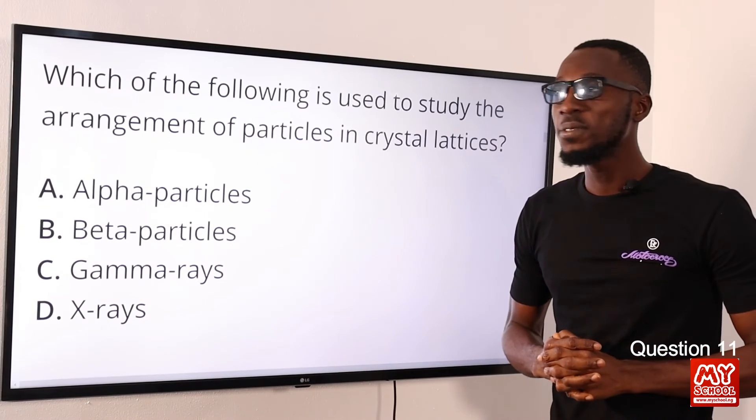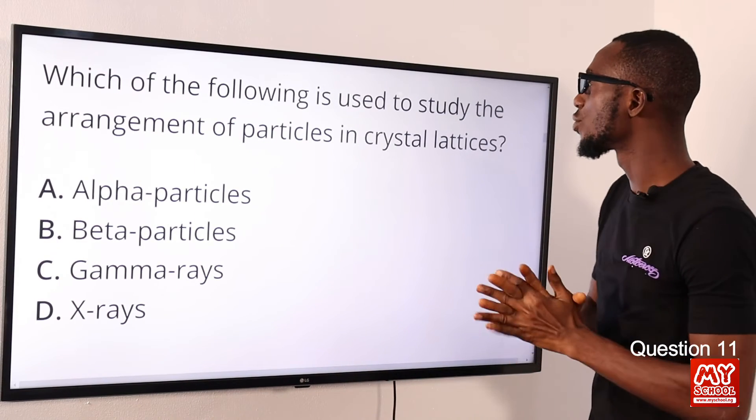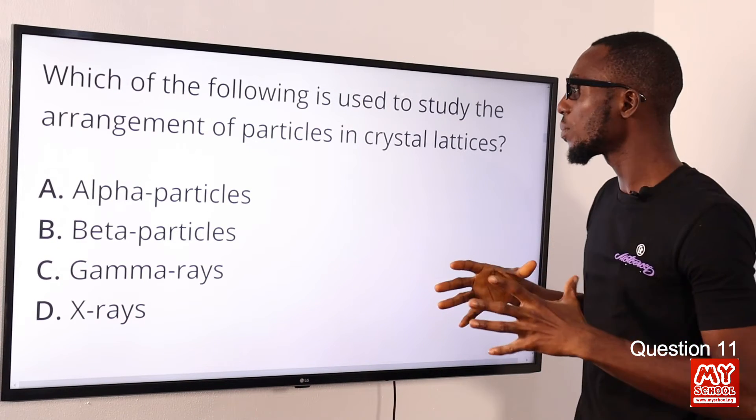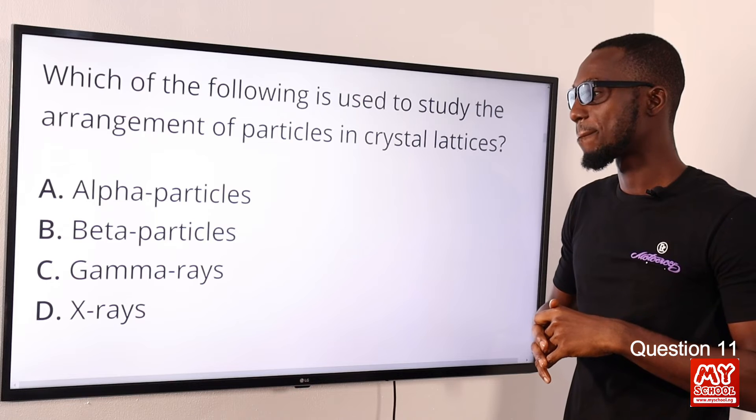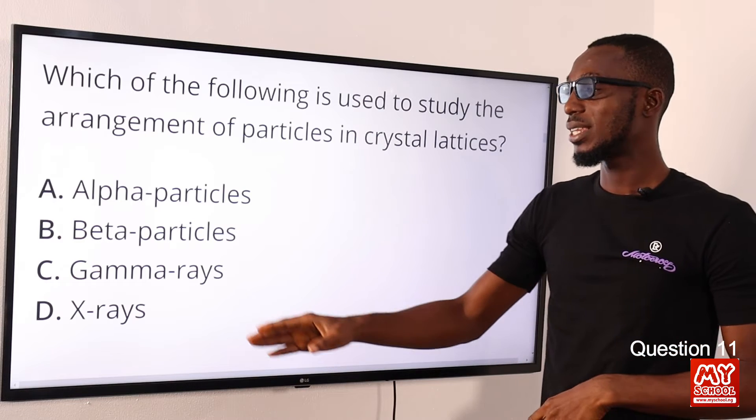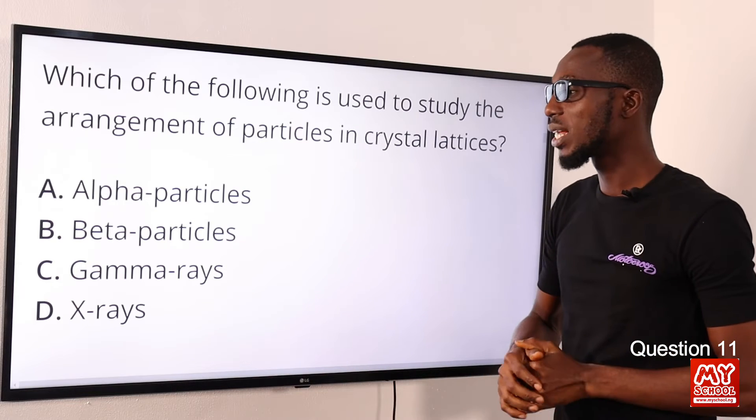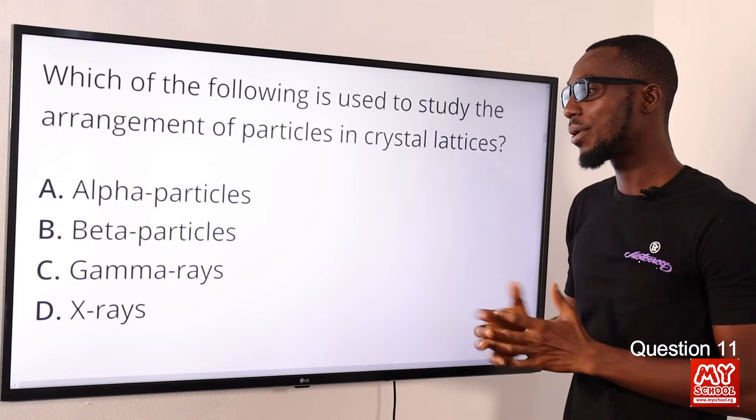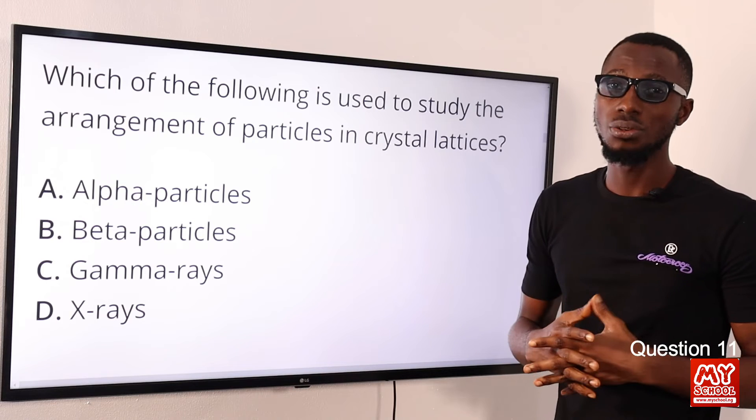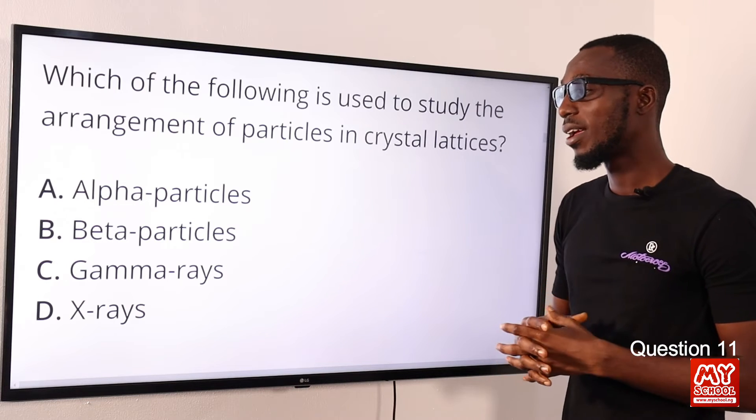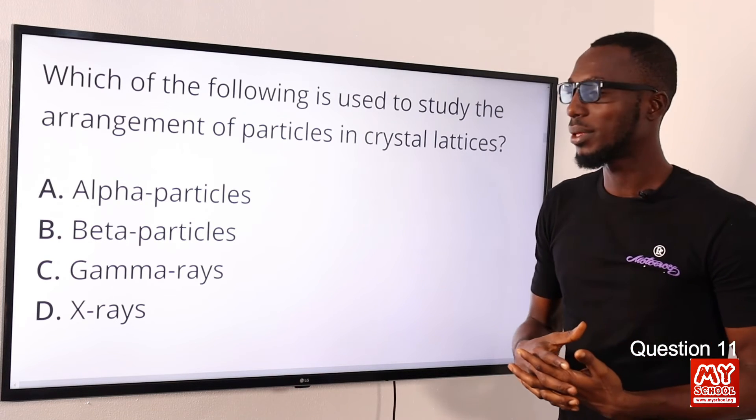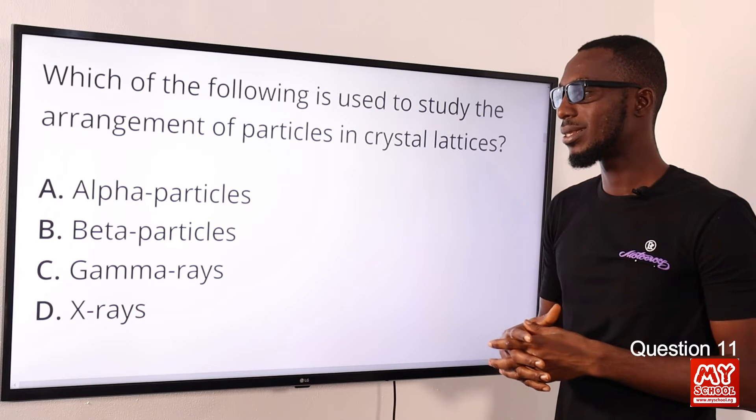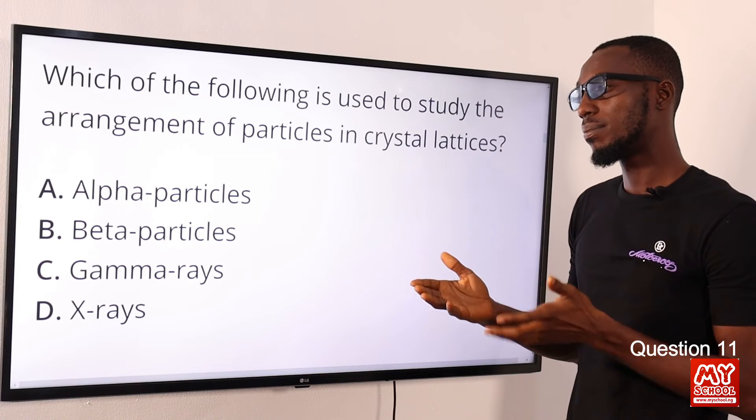Question 11: Which of the following is used to study the arrangement of particles in crystal lattices? That is of course the X-ray. When you look at gamma rays, intense gamma radiation can be used to destroy cancerous cells or cancerous growth.